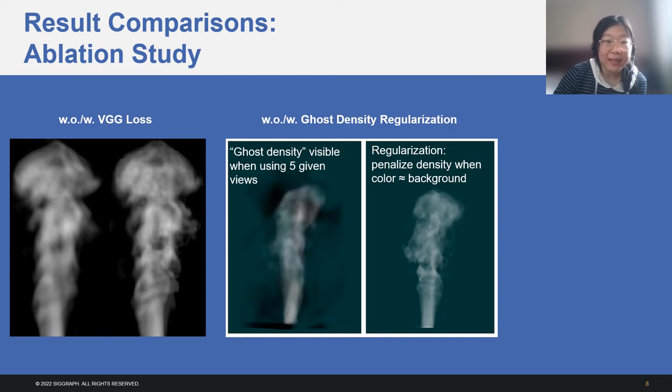It is likely to appear due to the density color ambiguity when using a sparse set of cameras. In such case, the network generates ghost density to truthfully fulfill image supervision in given views, but it is not physically plausible. As shown in the figure, we successfully remove this artifact using a regularization term to minimize the density when the color is close to the background.